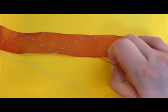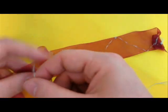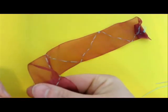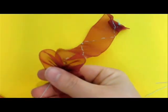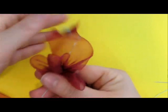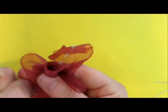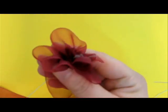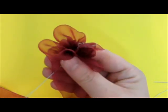Now our next stage is to gather the ribbon by pulling the thread gently. And this is how the flower forms. Be careful not to tear your thread. I would really recommend taking double thread. That means two layers of thread.